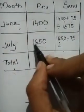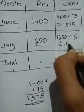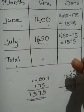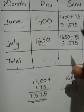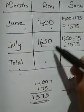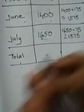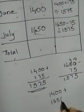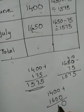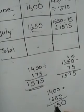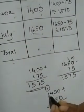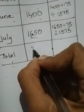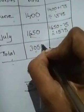The deposit of Sanu in the month of July is 1,575. Next, we want to find the total deposit of Anu and Sanu. The total deposit of Anu is found by adding these two numbers: 1,400 plus 1,650. 0 plus 0 is 0, 0 plus 5 is 5, 4 plus 6 is 10 — write 0 and carry 1, 1 plus 1 is 2, 2 plus 1 is 3. The answer is 3,050. That is the total deposit of Anu.